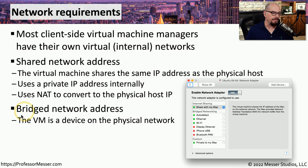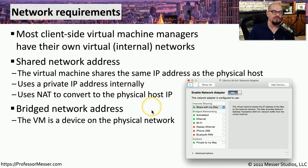A more traditional networking configuration is a bridged network address, where every VM has its own IP address. When you start up a virtual machine, it goes through exactly the same process for obtaining an IP address as any physical device connected to the network. This means every virtual machine has a different IP, other devices on the network can access the VM using that unique IP, and you don't have to worry about network address translation.